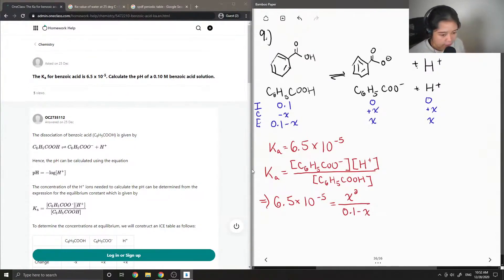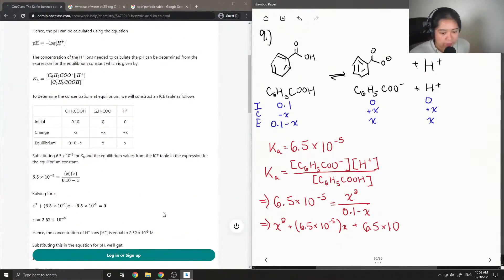So now we just need to solve for X. So let me rewrite this equation as a quadratic formula. So we have X squared plus 6.5 times 10 to the negative 5 X plus 6.5 times 10 to the negative 6. So this is our quadratic.